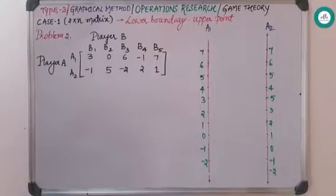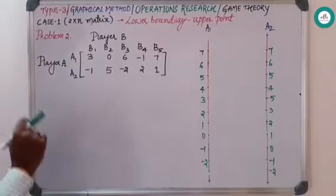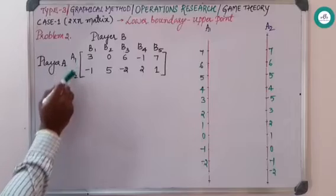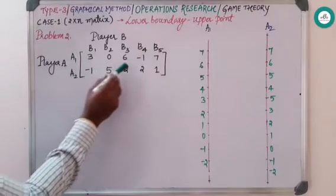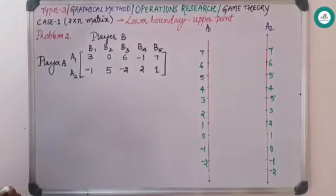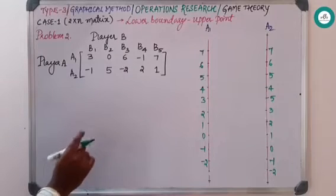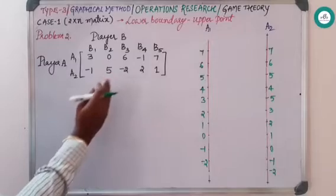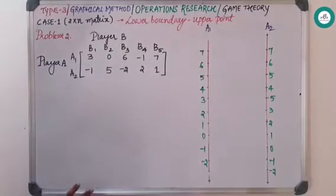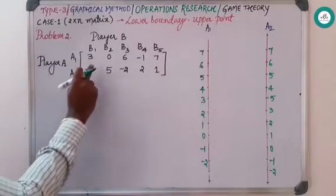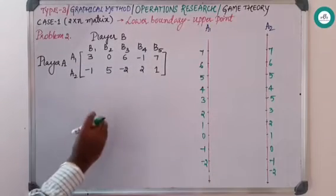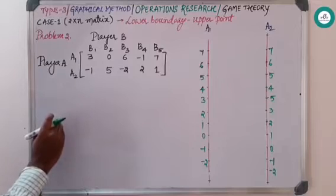Coming to the next problem, you just observed in the previous problem Player A had as usual two strategies, but Player B has more strategies here. In this particular type of problem, as I told, Player A should have only two strategies. Player B can have more than two strategies. Proceeding as usual, if you want you can check for the saddle point existing. If it is existing, directly you can write the value of the game as well as best strategies of Player A and Player B.